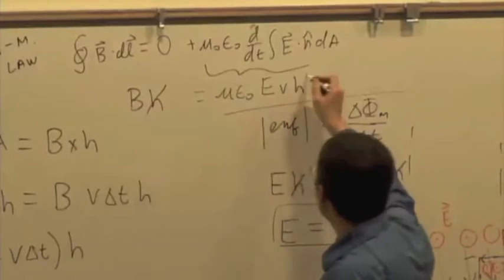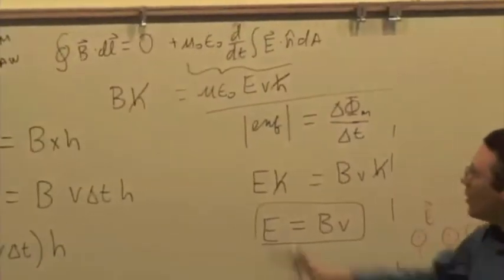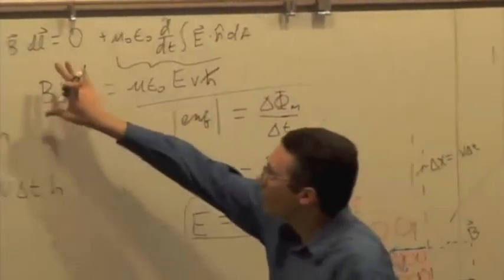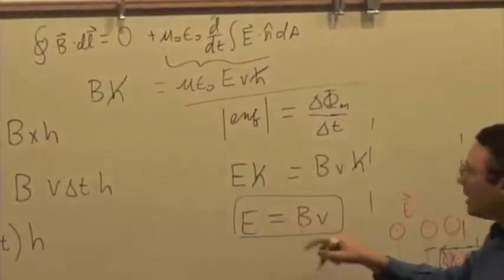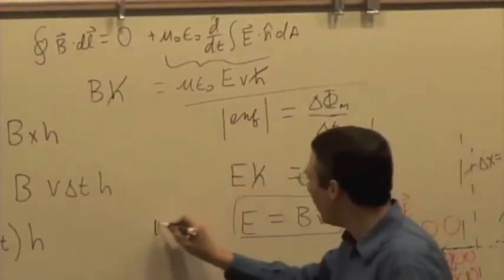And once again, the H cancels out. So I get another relationship. From applying Faraday's law, I get E equals B times V. This comes from Faraday.